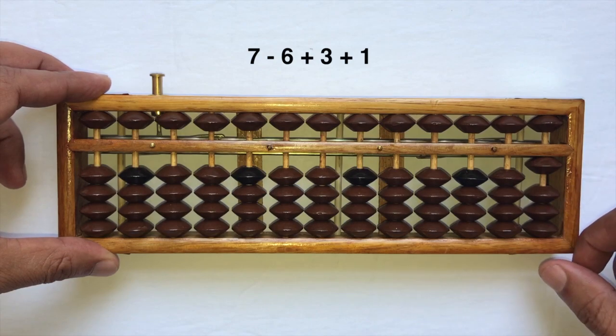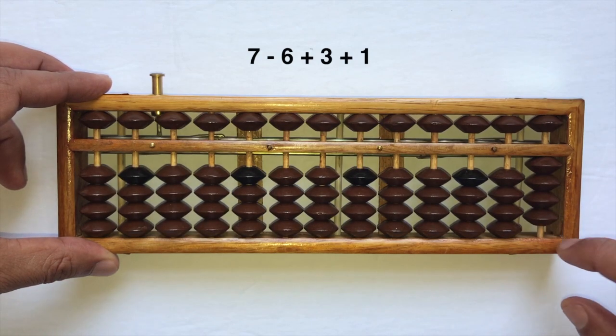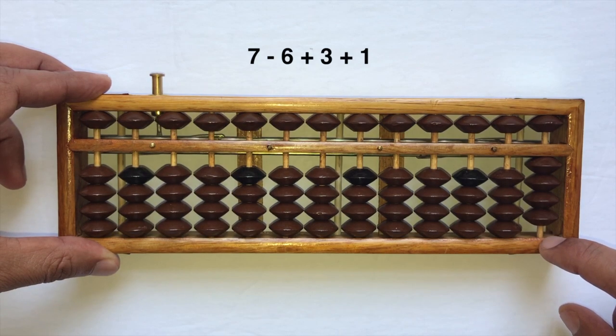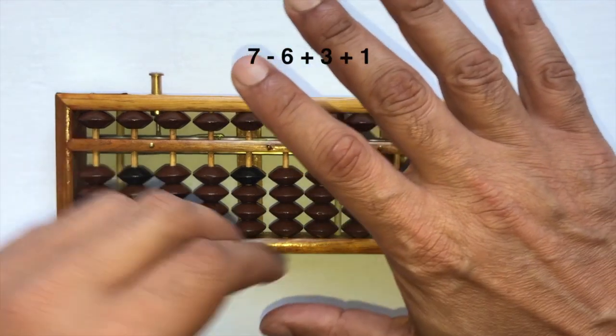That's seven minus six plus three plus one. So I've got to add a one here. To add a one, I take the help of one's little friend. And what is one's little friend? If you hold out your five fingers, take away one...